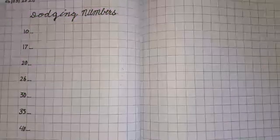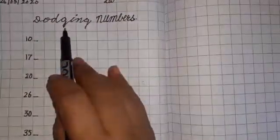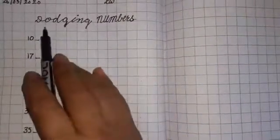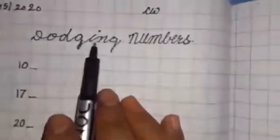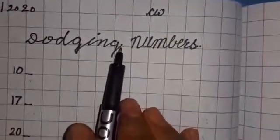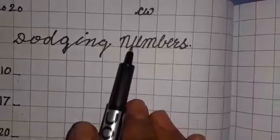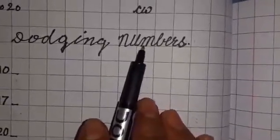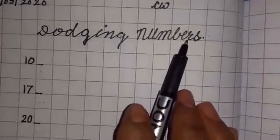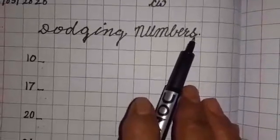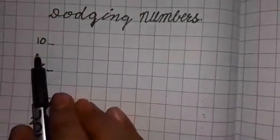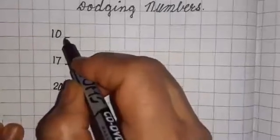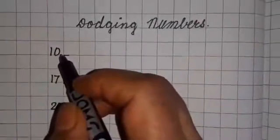So let's start. Here write down the heading dodging numbers: D-O-D-G-I-N-G dodging, N-U-M-B-E-R-S numbers. So I'm going to start here from the left side.